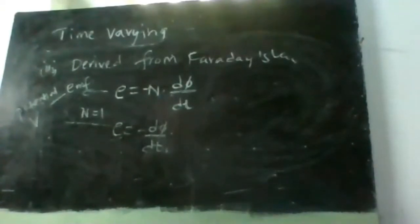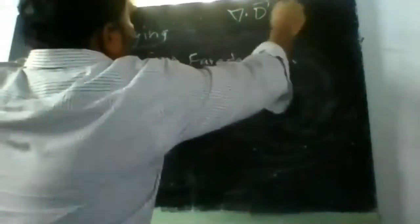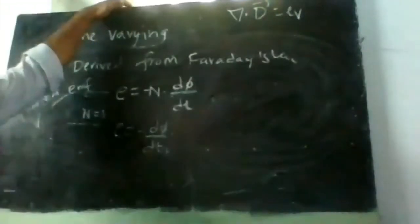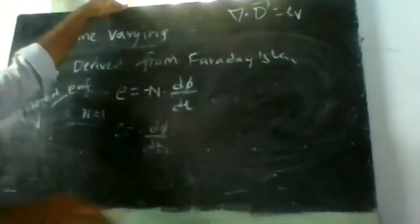For time-varying fields, the first two of Maxwell's equations don't vary. The first equation is del·D̄ = ρv — this doesn't change because the divergence is not changing; Gauss's law holds good.